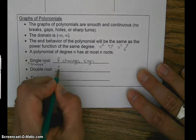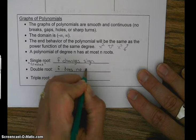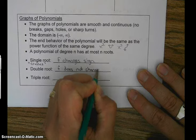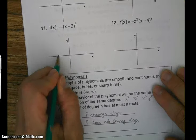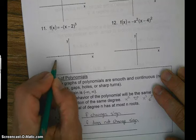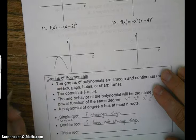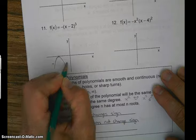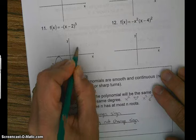Double root: the function does not change sign. Because think about it — let's say it bounces here. So it's negative, negative, negative, bounces, negative, negative, negative. So the function stays negative. It does not change sign. It's negative, negative. Versus if it crosses, it's negative and becomes positive.